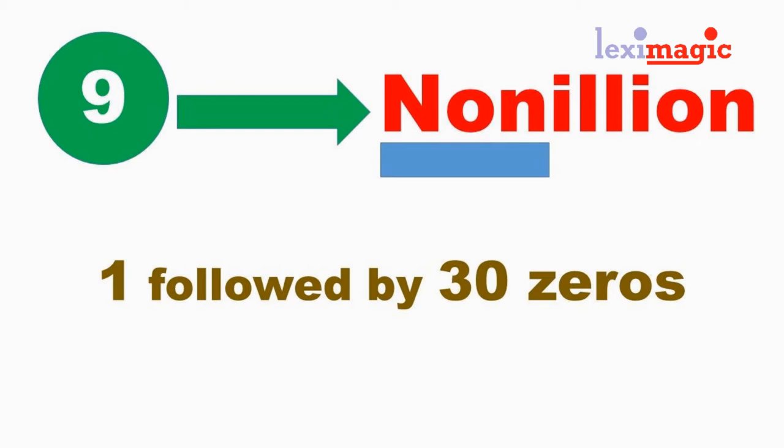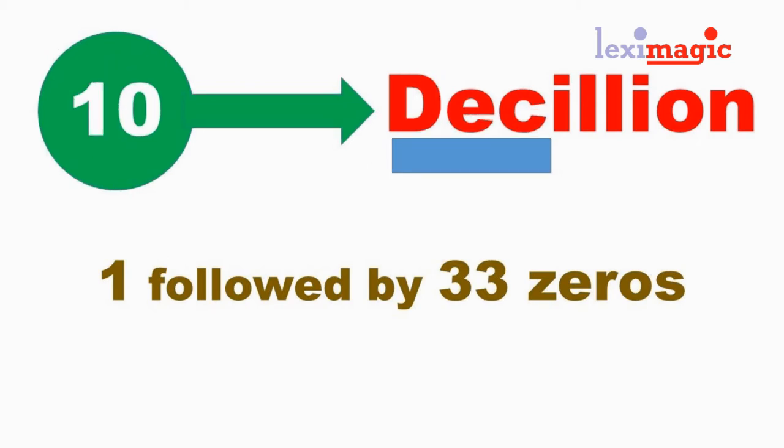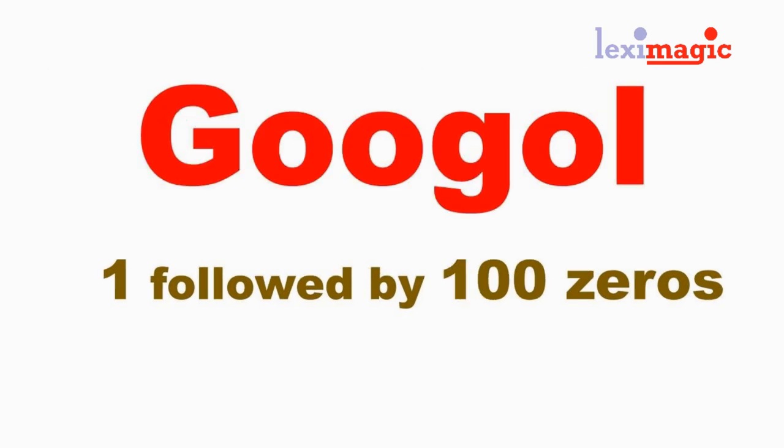After this, we come to the very large number Googol, which is defined as one followed by a hundred zeros.